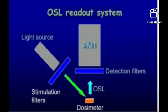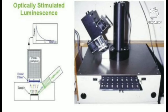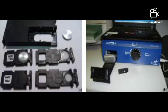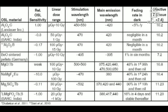You can see here the OSLD reader system. The small chips or sticks are placed into the reader. A laser light excites the material from the ground state to an excited state, emitting a small blue-colored light. This light passes through a light detection filter and into a PMT — photomultiplier tube — which then produces the report in digital format on the computer.